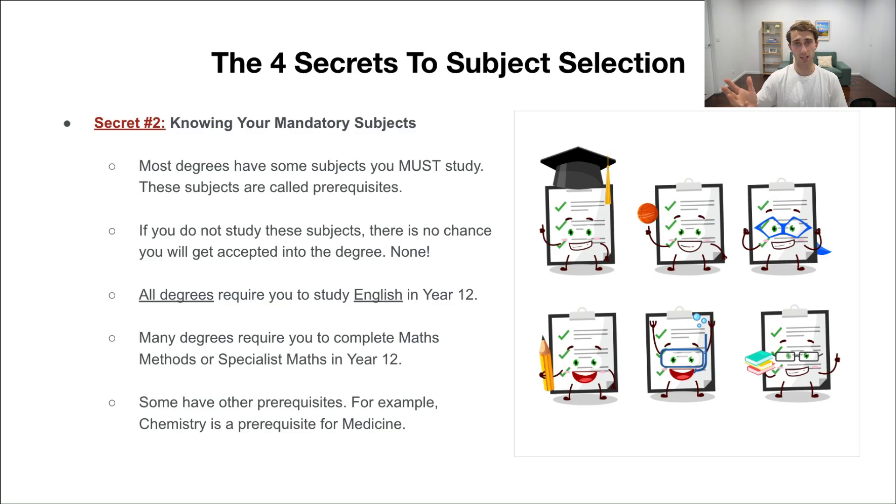For most people, this is probably going to be anywhere between one to three subjects. You have to do English. For some degrees, you might have to do maths. For some degrees, you might have to do chemistry. This is probably going to be anywhere between one to three out of your six subjects, things you just have to study.